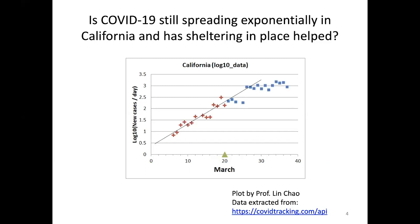The question is: is COVID-19 still spreading exponentially in California, and has sheltering in place helped stop that exponential spread? This is a figure plotted by Lin Chao, a professor at UCSD. On the x-axis we have log 10 new cases per day — we'll explain this axis in the next lecture when I talk about exponential growth and selection.